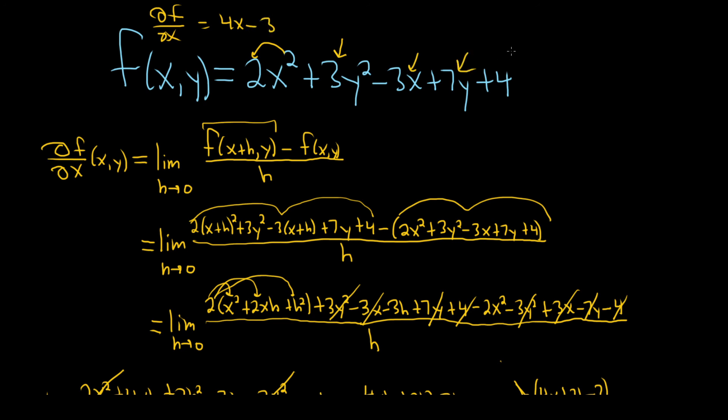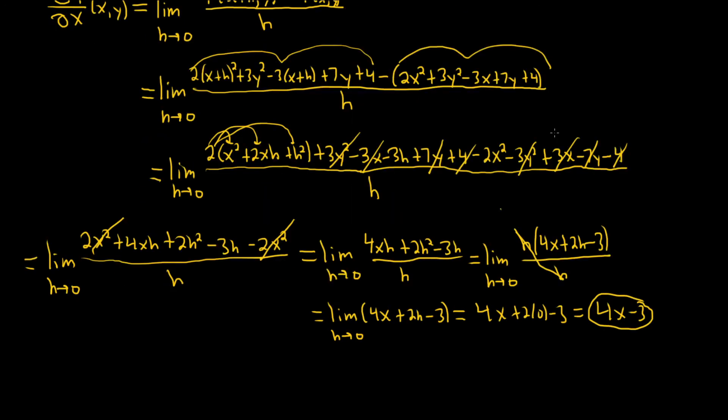This will be 0 because it's a constant. This will be 0 because it's a constant. 4x minus 3. Is that what we got before? Yay! We did it right. I hope this video has been helpful. Good luck.